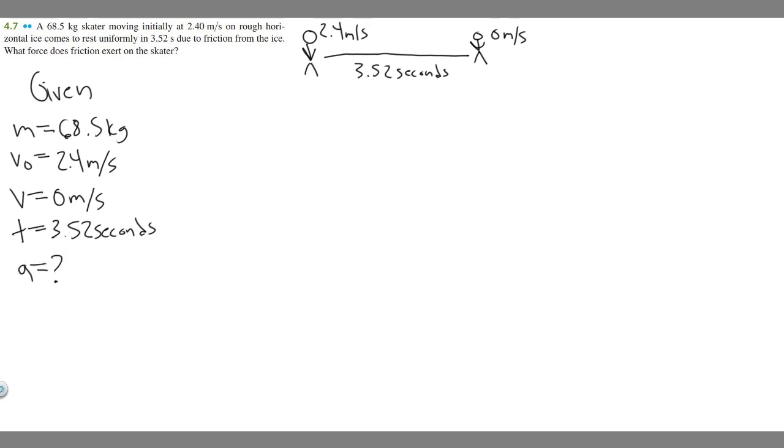So we're going to use kinematics to solve for the acceleration first. So the formula we're going to use is V equals V sub 0 plus A times T. So notice how we're given V, we're given V sub 0, and we're given T, so we can solve for A.